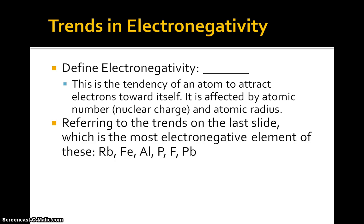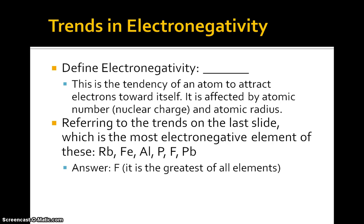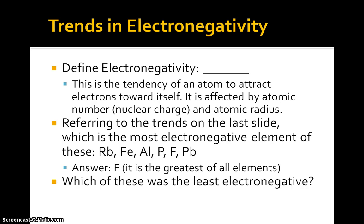Referring to the trends from the last slide: of rubidium, iron, aluminum, phosphorus, fluorine, and lead, the most electronegative element is fluorine, and the least electronegative is rubidium.